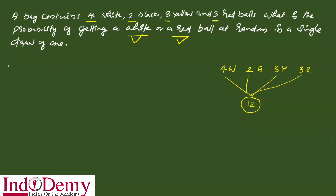The probability of getting a white or red ball is equal to the probability of A union B. Because the probability of A union B equals the probability of A plus the probability of B.